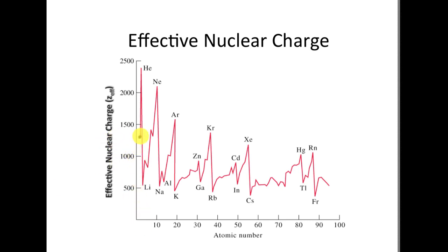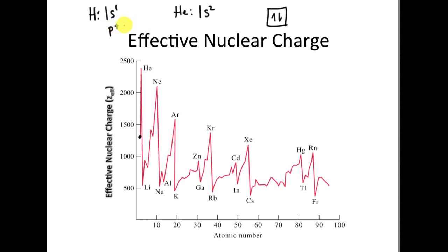Starting with hydrogen — we're going to look at how its ZEFF changes as we go from hydrogen to helium. Hydrogen has 1s¹. Helium has 1s². We stayed in the same energy level, so shielding didn't change. You might argue that putting two electrons in the same orbital increases repulsion, but no — because I went from one proton to two protons, the increase in protons overrides it. That's not one of the three repulsion cases. Protons go up, therefore ZEFF dramatically goes up from hydrogen to helium.